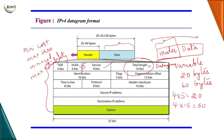Then we have the next three fields: the identification field, the flag field, and the fragmentation offset. All three fields are related to the concept of fragmentation, which we will discuss shortly.